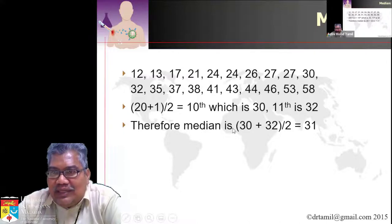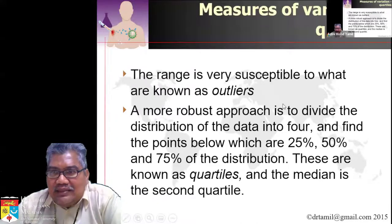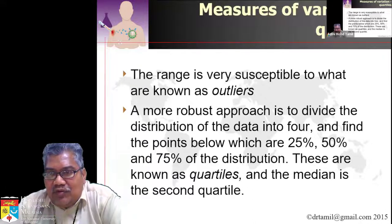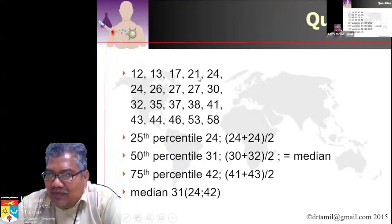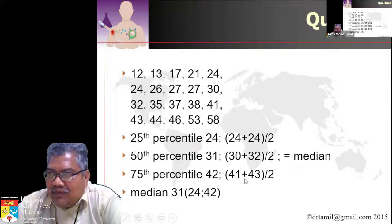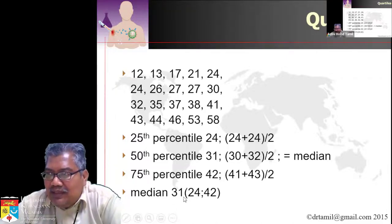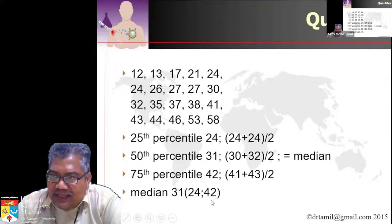Median is the middle point of the data. Quartiles are for data that is not normally distributed — we divide the data into four equal parts. Quartiles are just the borders between the four sections. For example, with values 24, 31 (median from 30 and 32), and 42 (from 41 and 43), you would present: median 31, in brackets 24 and 42.